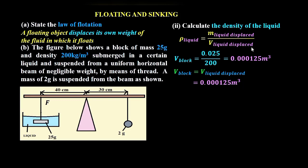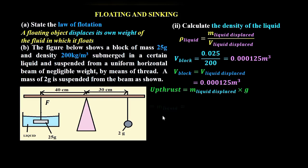With the volume of liquid displaced known, we now need the mass of liquid displaced. According to Archimedes' principle, upthrust equals the weight of the liquid displaced, so upthrust equals mass times gravitational field strength. Therefore, mass of liquid displaced equals upthrust divided by g: 0.235 divided by 10 = 0.0235 kilograms.